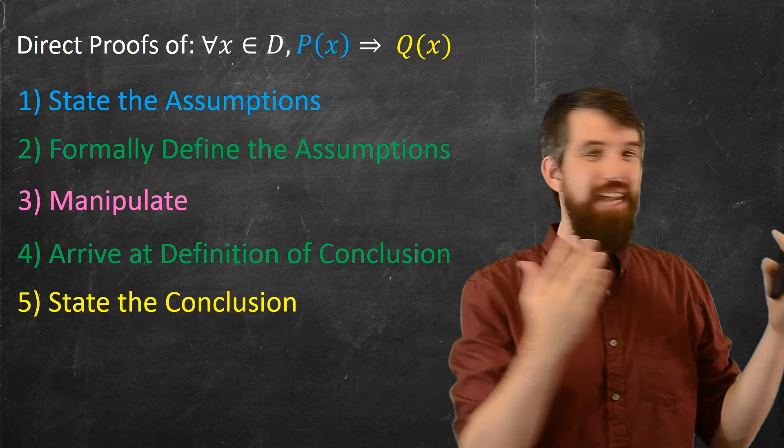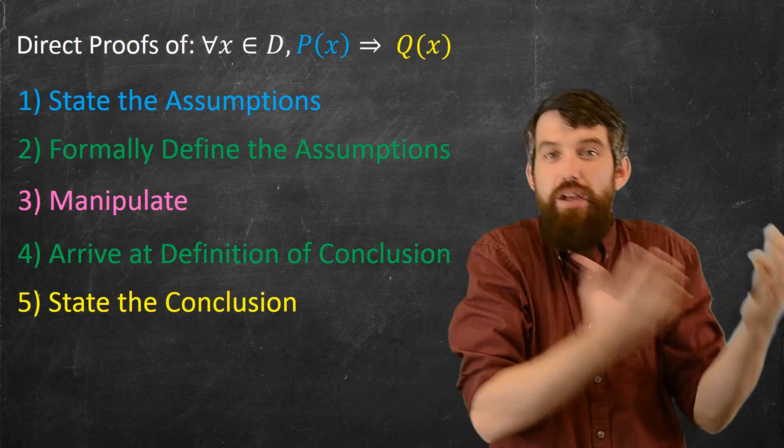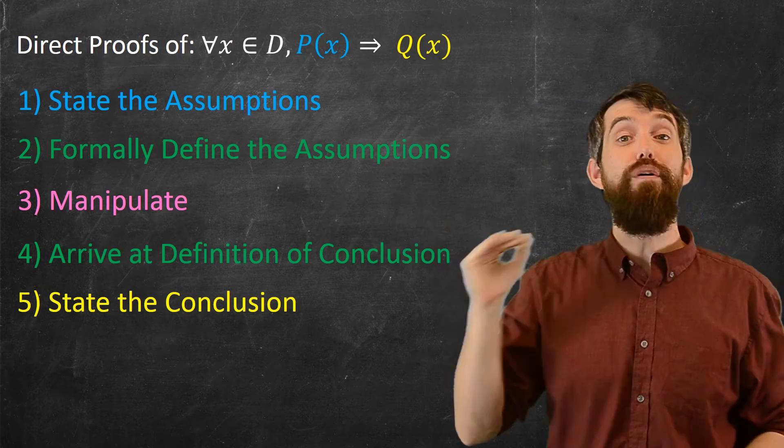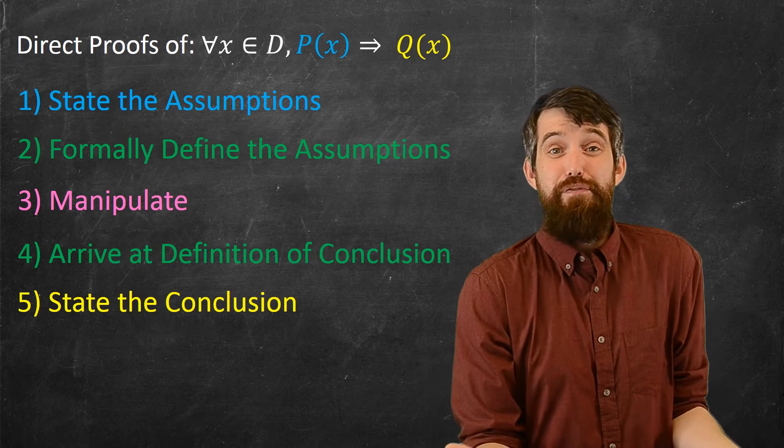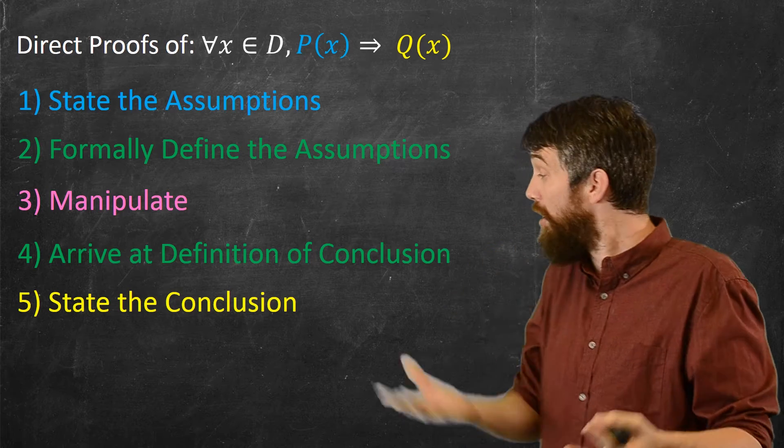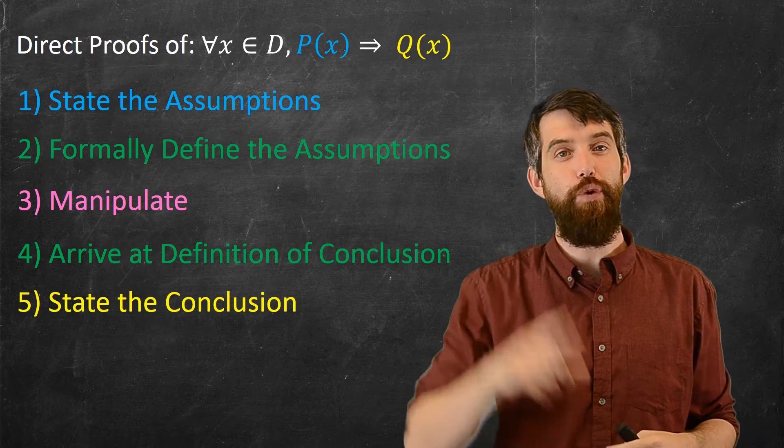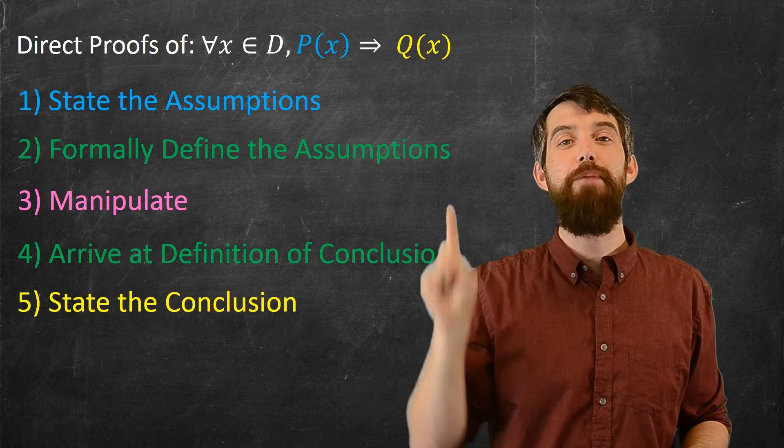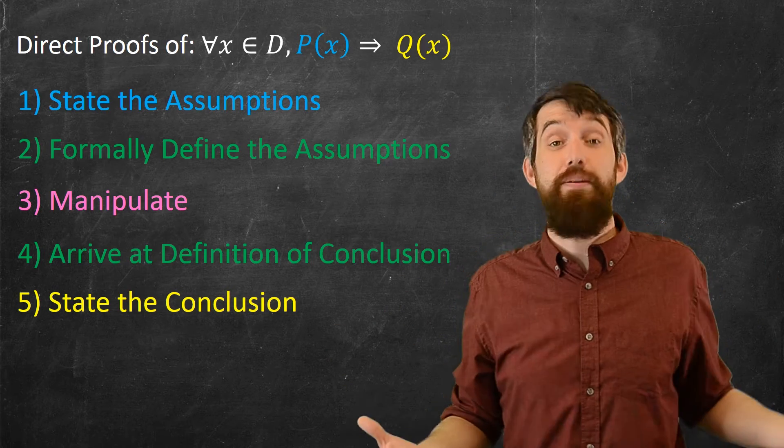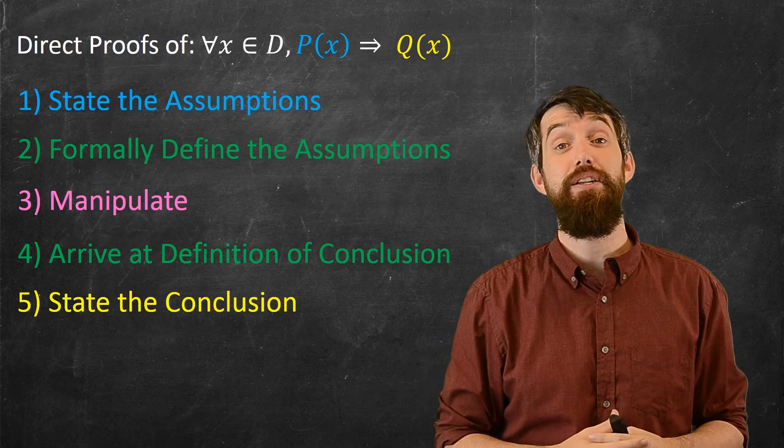Now, the actual definitions change proof-to-proof, and the actual assumptions and conclusions change proof-to-proof. But steps 1, 2, 4, and 5 are all kind of a bit for free. You can sort of write them down, and if you know what your definitions are, you can get most of the structure of the proof. The hard part is the manipulations, and that changes for every single proof. In this case, we had a relatively simple manipulation, but in some proofs it can be very challenging.